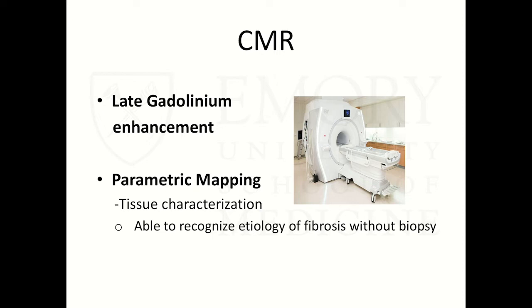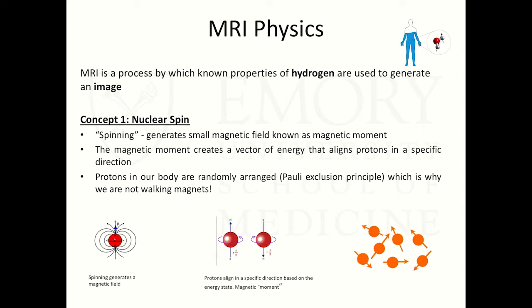Other imaging modalities include CMR. We can look for late gadolinium enhancement, and more recently there has been increased interest in parametric mapping. To understand this, some MRI physics is necessary. Our body is 70% water. MRI takes advantage of hydrogen atom protons to generate an image. There are four important concepts: nuclear spin, alignment and precession, resonance, and relaxation.